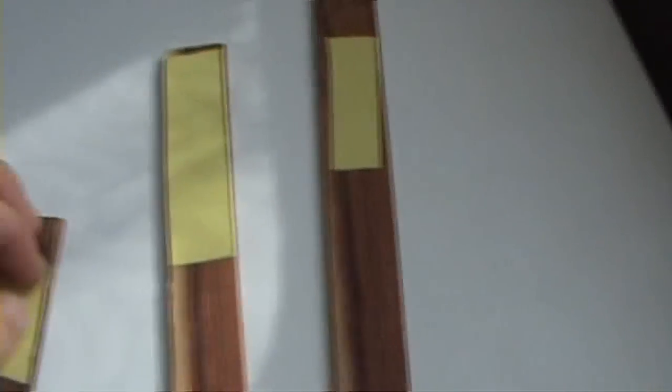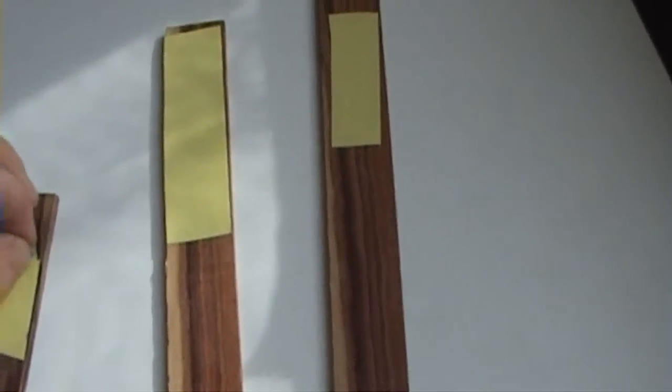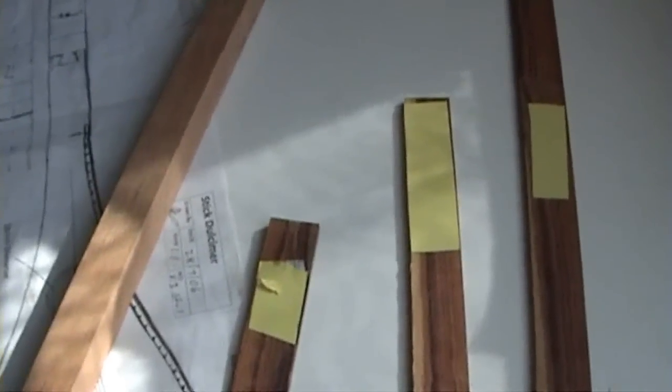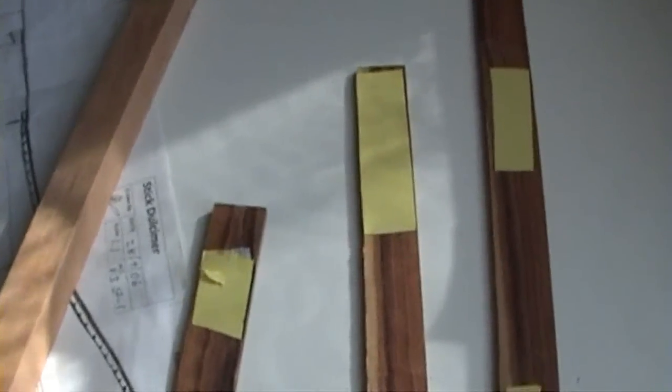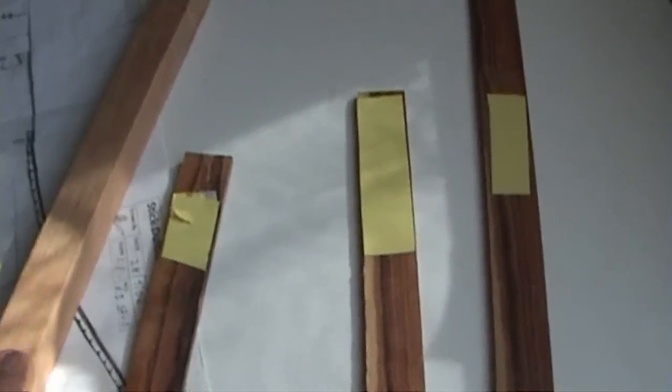I've attached double-sided tape to the fingerboards. I'm now going to stick them to the neck blank and put them through the thicknesser together so that both the fingerboard and the neck are the same width.